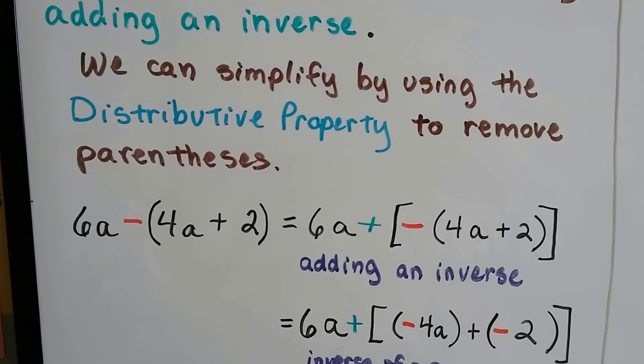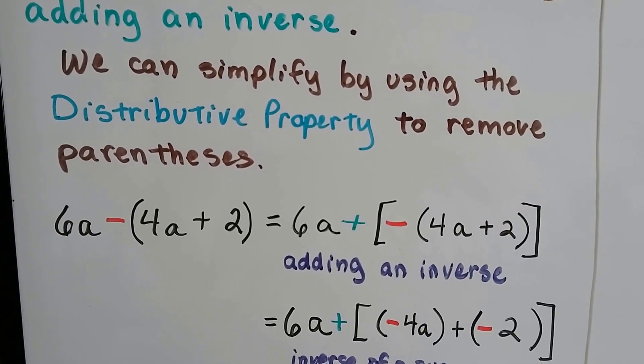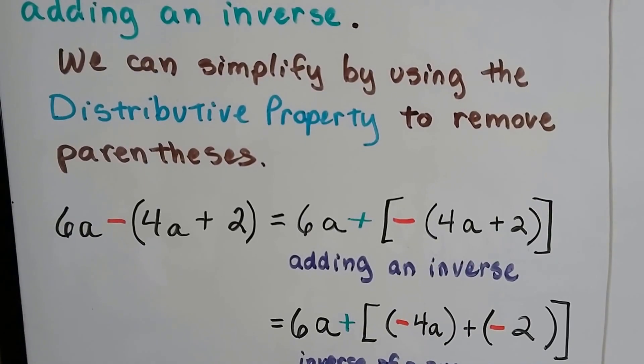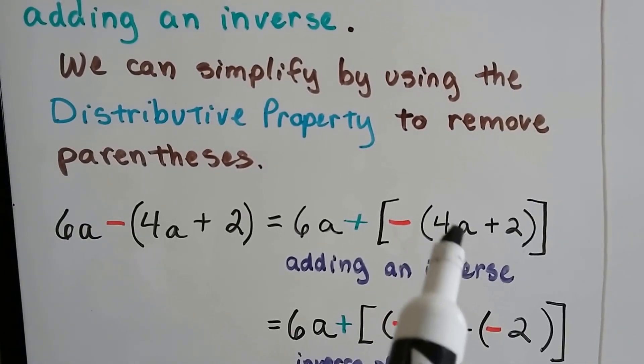We see 6a minus (4a plus 2). It's going to be 6a plus, and we can put a bracket here, a negative 4a plus 2.